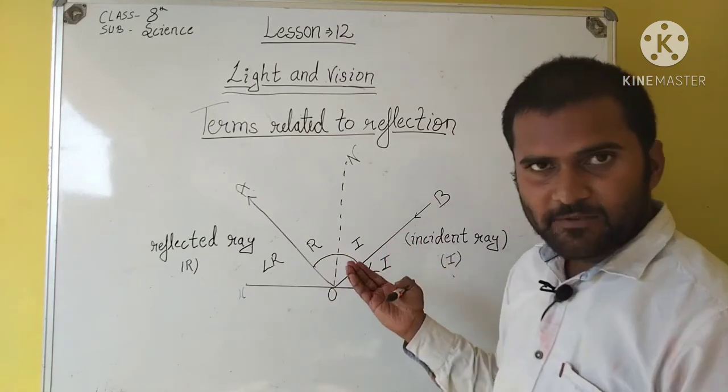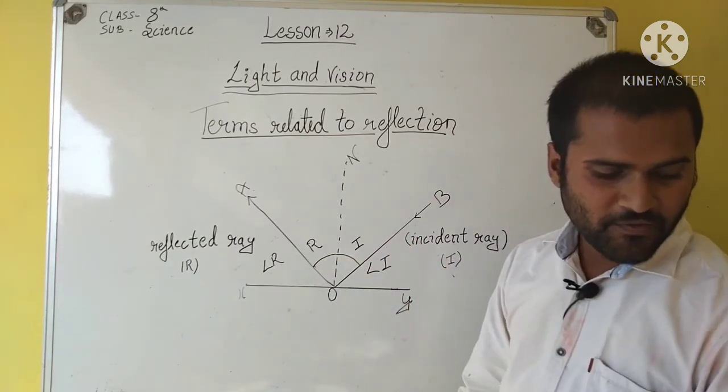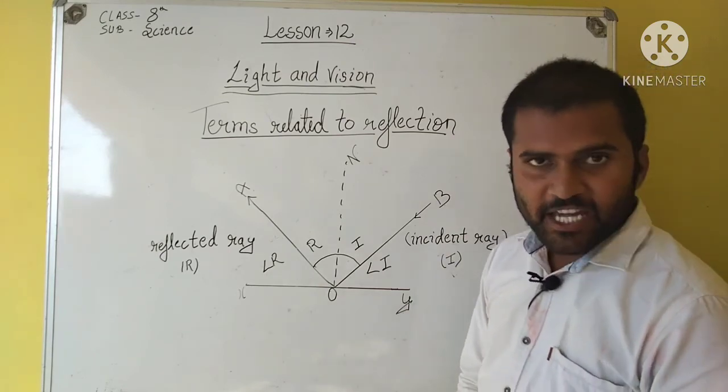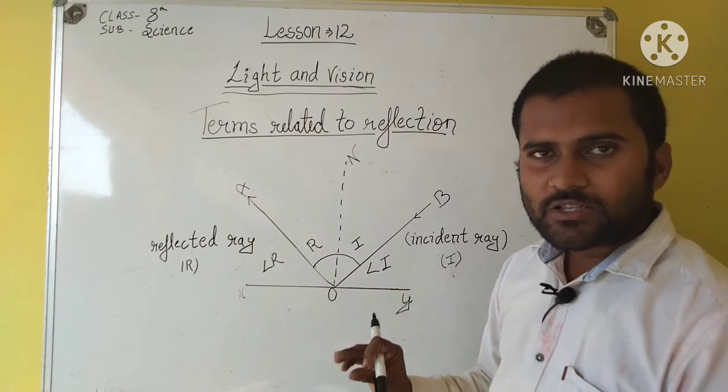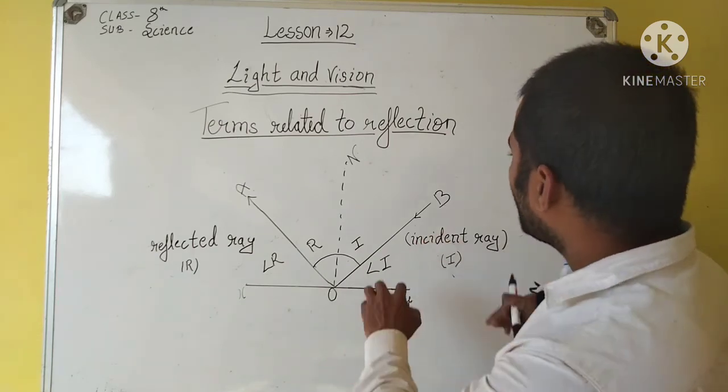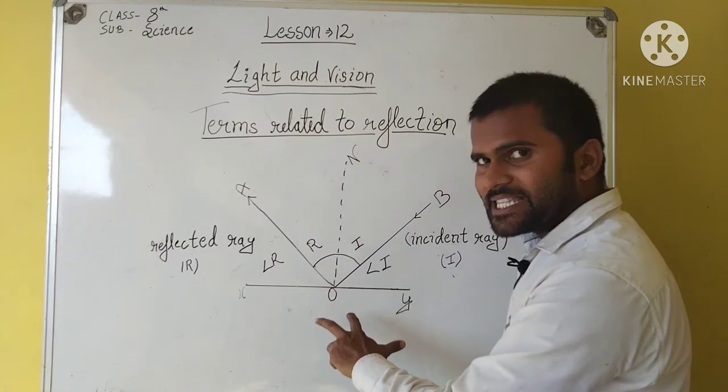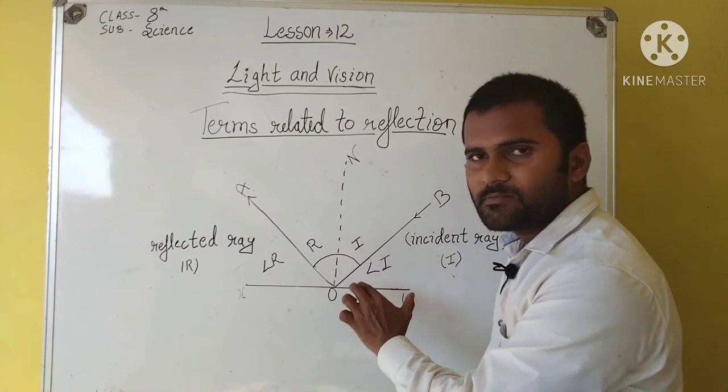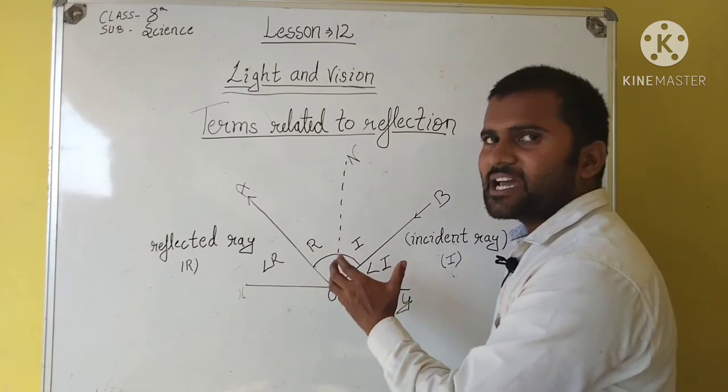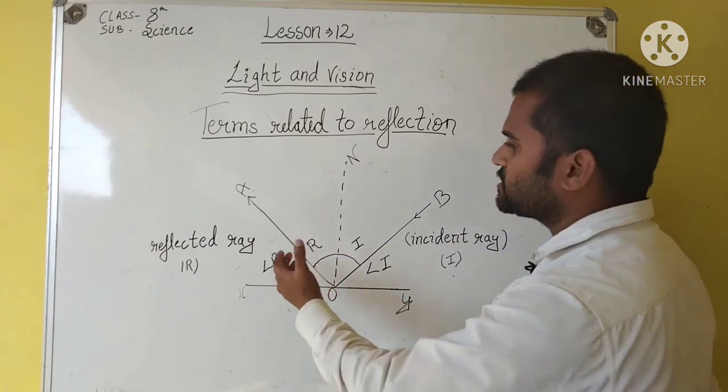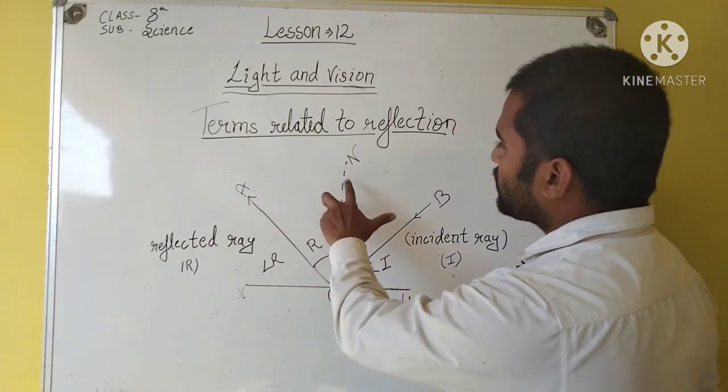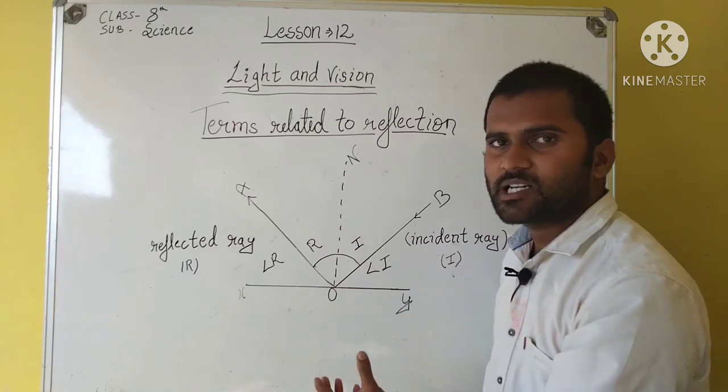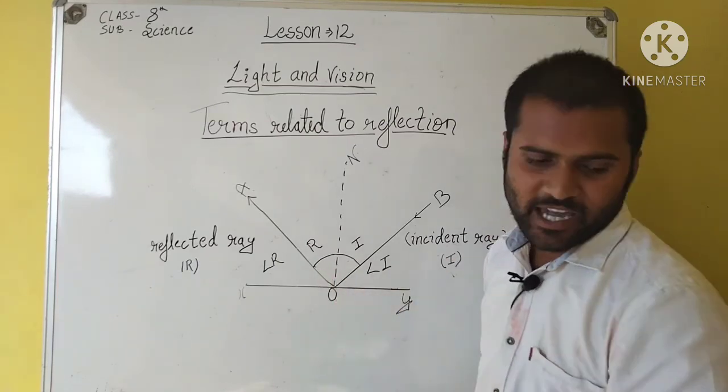And the angle of incidence and the angle of reflection, I am going to explain you what is the angle of incidence and what is the angle of reflection. Angle of incidence, the angle made by the incident ray with the normal is called incident angle. The angle between the normal and incident ray, that is the angle of incident. And the same here is also with the reflected ray. The angle between the normal and reflected ray, that is the reflected angle.